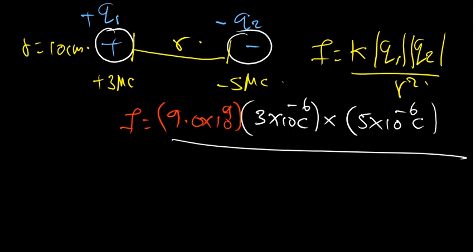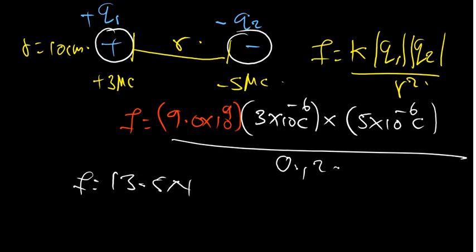So r squared is 0.1 squared. On the top we calculate: 9×10⁹ times 3×10⁻⁶ times 5×10⁻⁶ = 0.135. Dividing by 0.1 squared gives us 13.5 newtons. So the electric force acting between those two charges is 13.5 N.